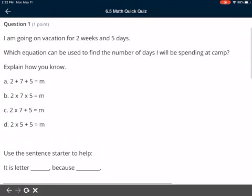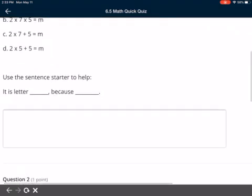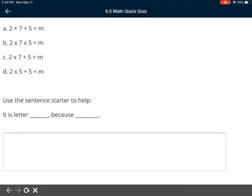Question number one says, I'm going on vacation for two weeks and five days. Which equation can be used to find the number of days I'll be spending at camp? Explain how you know. So is it A, 2 plus 7 plus 5 equals M? B, 2 times 7 times 5 equals M? C, 2 times 7 plus 5 equals M? Or D, 2 times 5 plus 5 equals M? Then you can use the sentence starter to help. It is letter A because, it is letter B because, C or D, whatever.